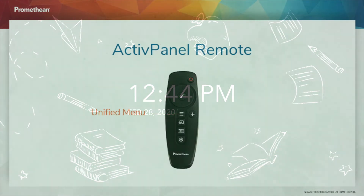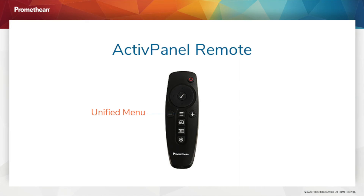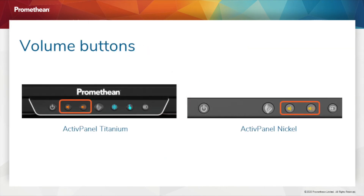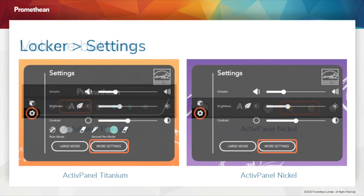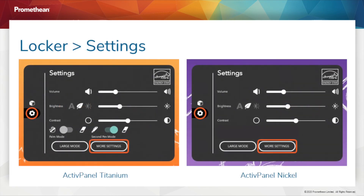To reinstate the Unified Menu, select the Unified Menu button from your Active Panel remote. Alternatively, you can tap either of the volume buttons on the front of your Active Panel. This causes the Locker to reappear. From here, you can return to More Settings and toggle the Unified Menu back on.